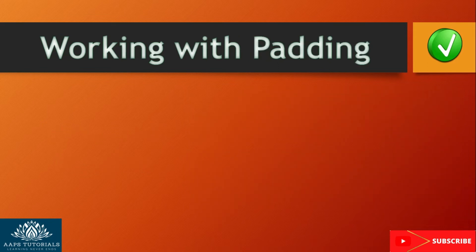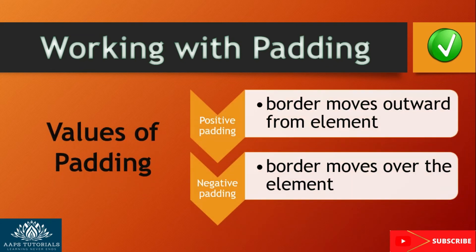Padding: as we have seen earlier, padding will create space around the content to control each side view. Padding can be controlled by altering property values like length and width of the element content area. If we set a high value of padding, the border moves outwards from the elements, and with a low value of padding, the border moves over the elements.